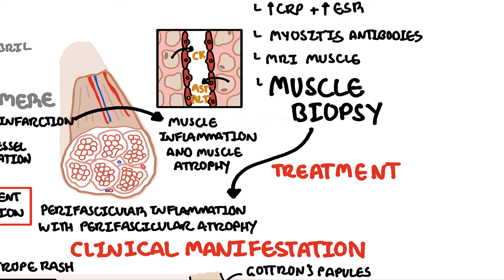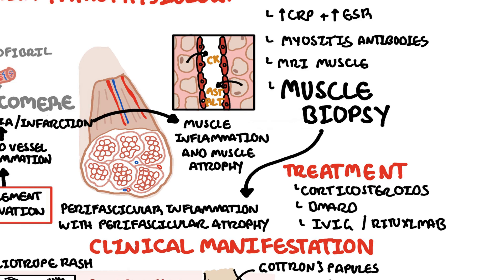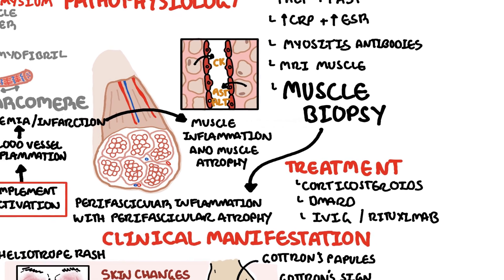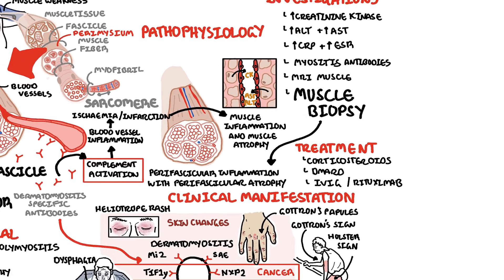Treatment of dermatomyositis is with glucocorticoids, and disease-modifying antirheumatic drugs can also be used, such as methotrexate or azathioprine. Intravenous immunoglobulins and other immunosuppressants such as rituximab and cyclophosphamide are also used. There is a risk of flares, which can be treated with escalated doses of glucocorticoids.